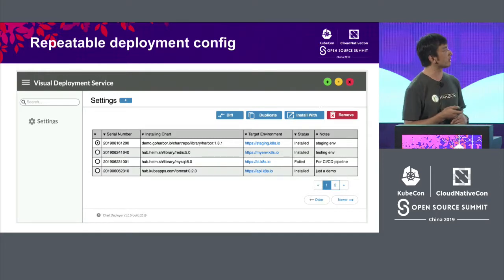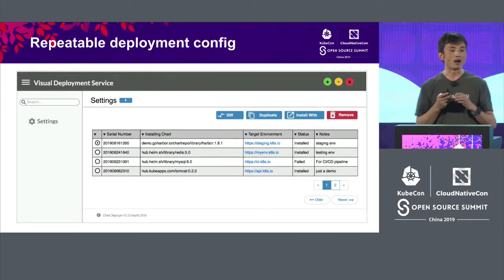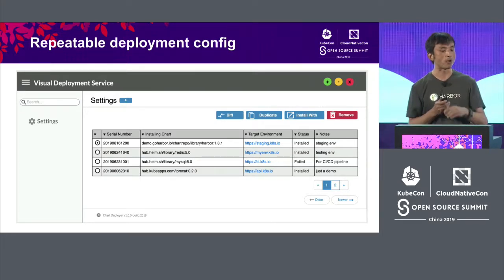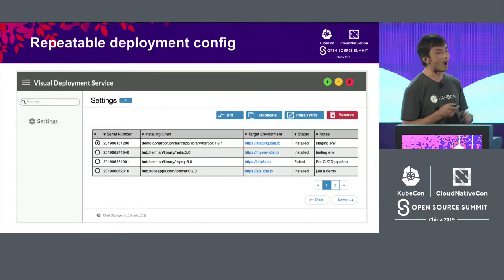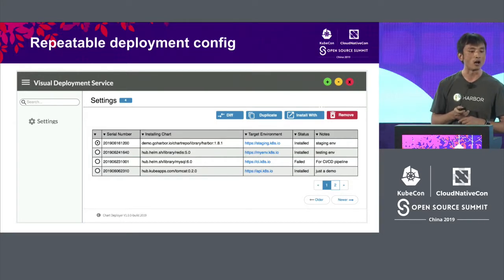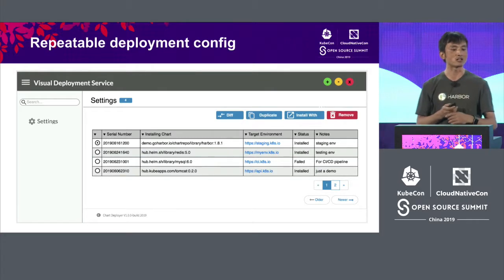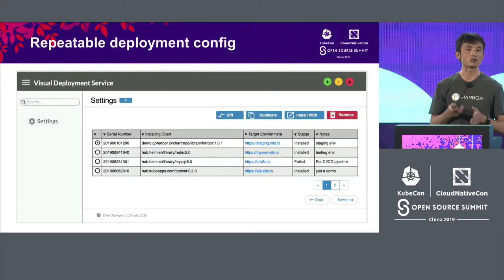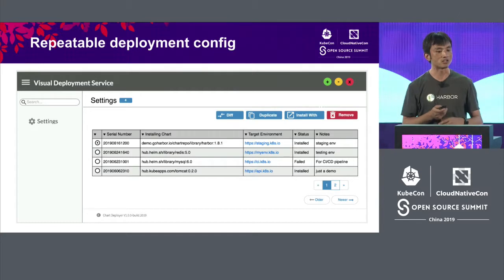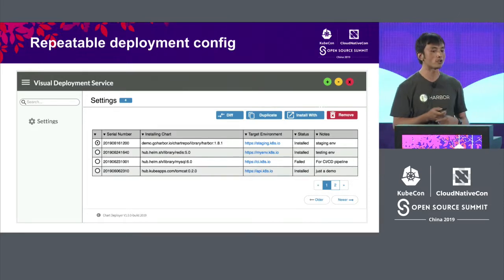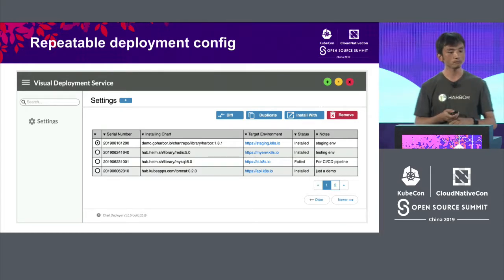We mentioned that deployment configurations can be persistent and also reviewable. You can do that based on different versions and it will help you to review all of the configuration items. You can do a diff between two versions, and based on the existing ones you can generate a new option of configuration and reinstall based on the current values in your chart.